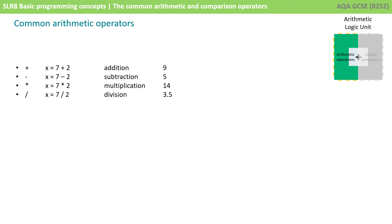To round off, there's the division symbol. For example, x equals 7 divided by 2, 3.5. We then have exponentiation, x equals 7 to the power of 2, so that would be 49.